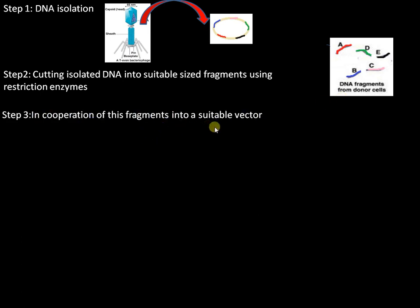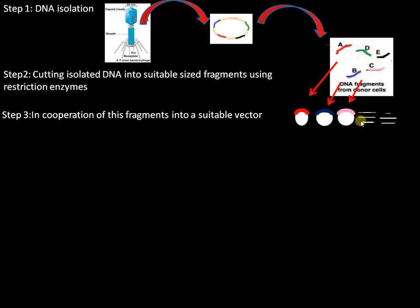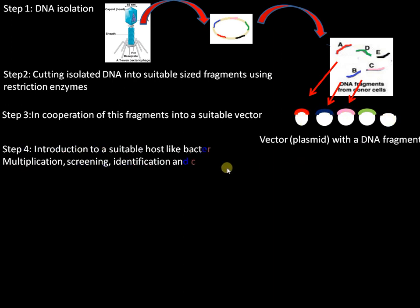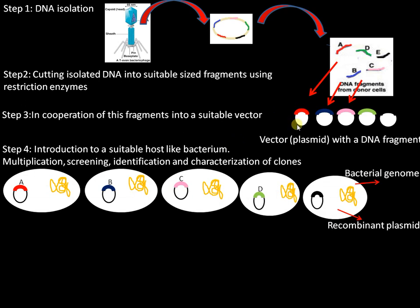Step three: we have to introduce these fragments into a suitable vector. The vector can be a plasmid, cosmid, lambda phage, etc. We have introduced our fragments into a suitable vector — in this case a plasmid. Step four: introduction into a suitable host, often a bacterium like E. coli. Here we have the recombinant DNA molecule, which is the plasmid with the inserted DNA fragment, introduced into E. coli.